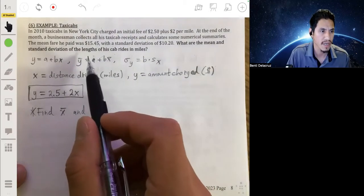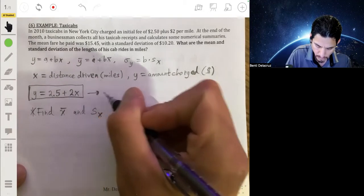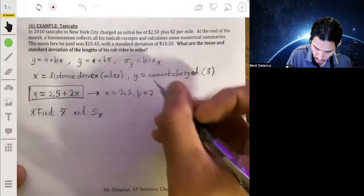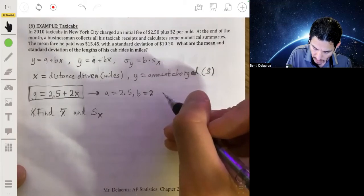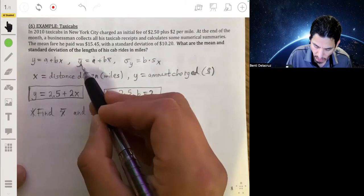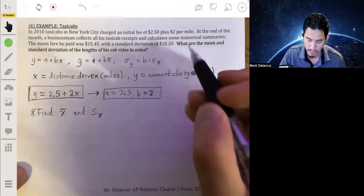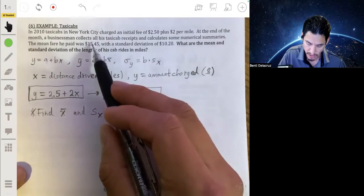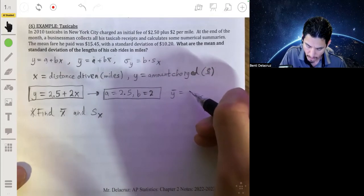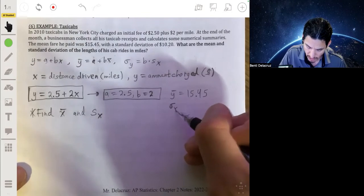So what we do is we recognize what the a and b values are from here, because the a is going to be the 2.5. So if a is 2.5 and b is 2, then that means that y bar is going to be a plus 2 times x bar. Now, we're given that y bar is $15.45. So let's write that right here, 15.45. And we're given the standard deviation of y is 10.2. So the standard deviation of y is 10.2.